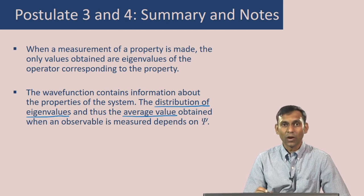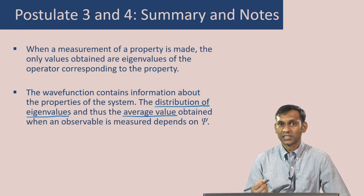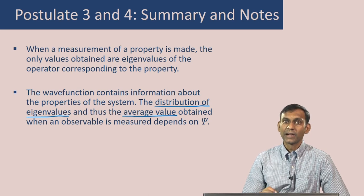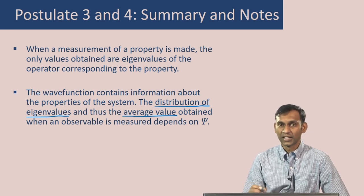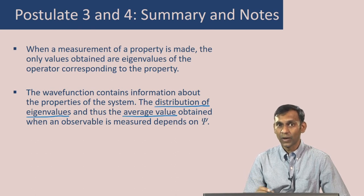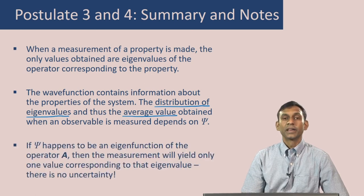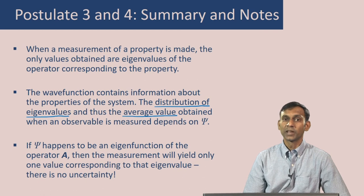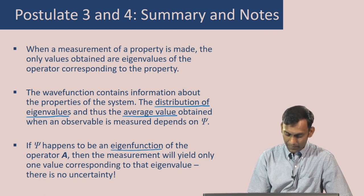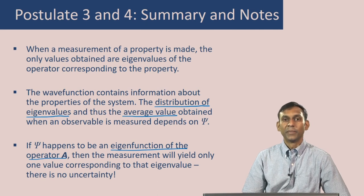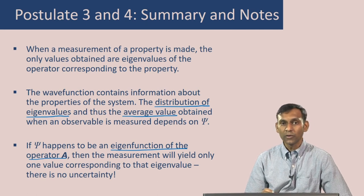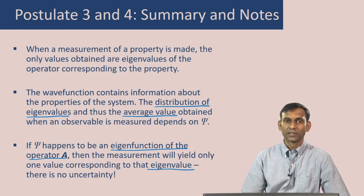The postulate tells us what the average value of a particular property is. So if you measure the energy of a quantum particle, it will tell you what the average value of that energy is. The energy itself might have different values and would have a distribution. Postulate 4 tells us what that average value is. If psi happens to be an eigenfunction of the operator A, then the measurement will yield only one value corresponding to the eigenvalue, and in that case there is no uncertainty.